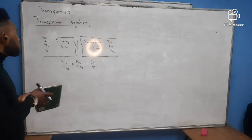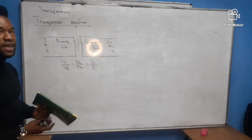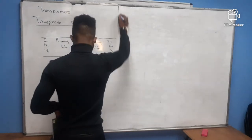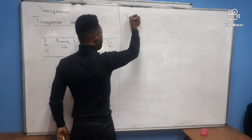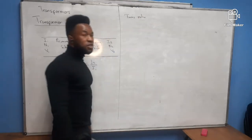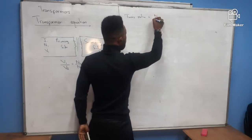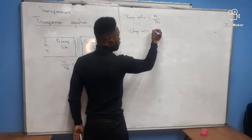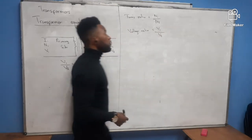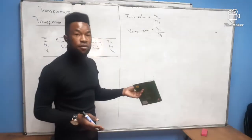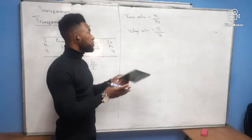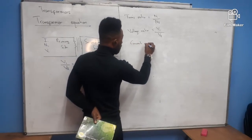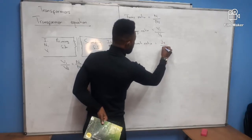This transformer equation can be used to calculate either the primary or secondary values — voltage, number of turns, or current. You also have the turns ratio, which is N1 over N2; the voltage ratio, which is V1 over V2; and the current ratio, which is I2 over I1.